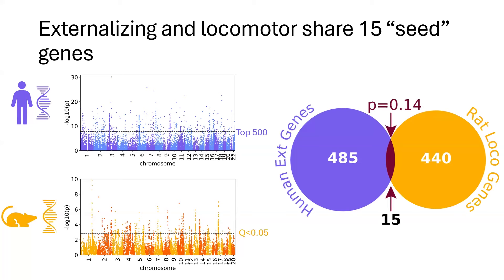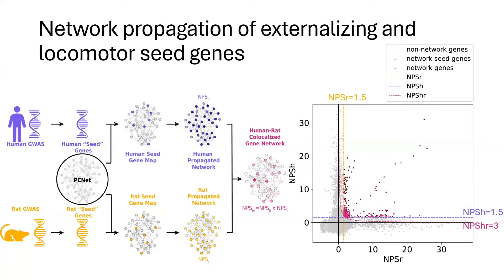Looking at our 500 genes for externalizing and our FDR 0.05 cutoff genes for rats, we find that there are 15 genes that overlap across the two species, which is a non-significant overlap. However, if we then use our framework and run network propagation, we can identify the proximity for each of these genes in the gene network.